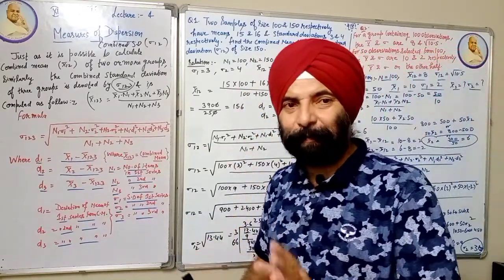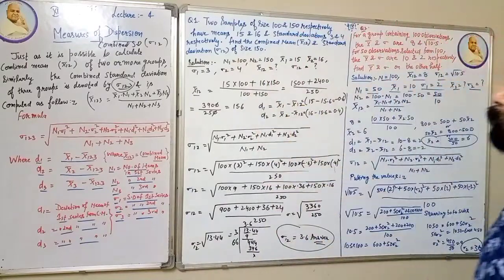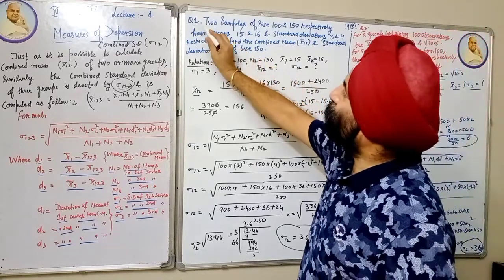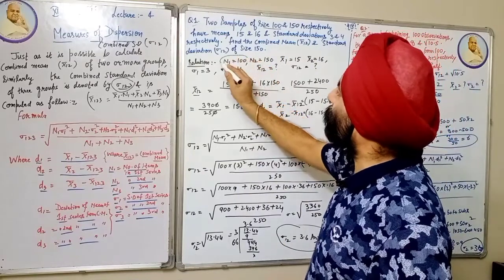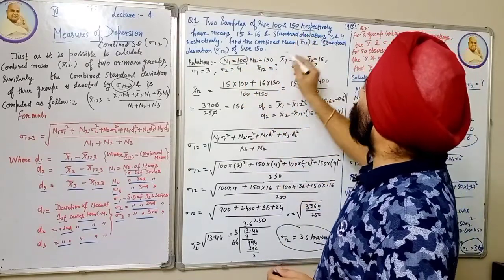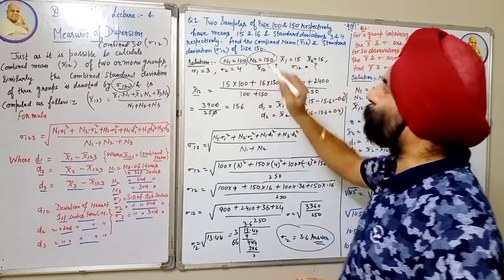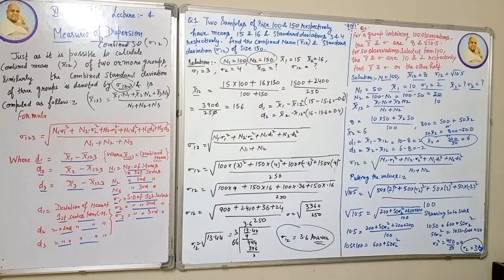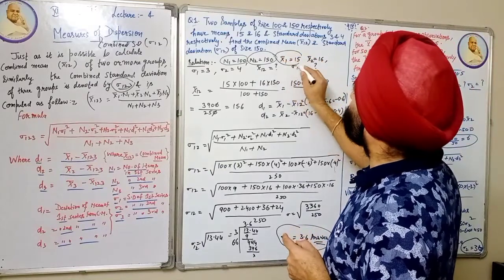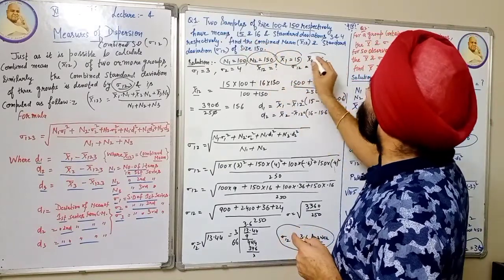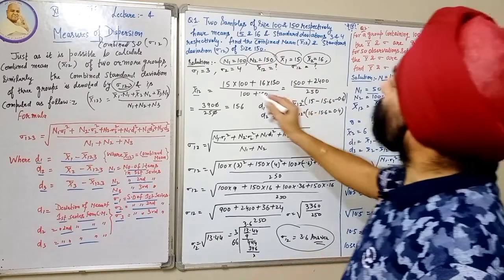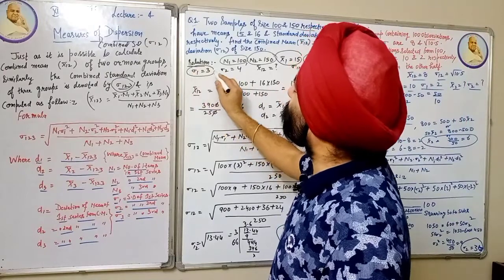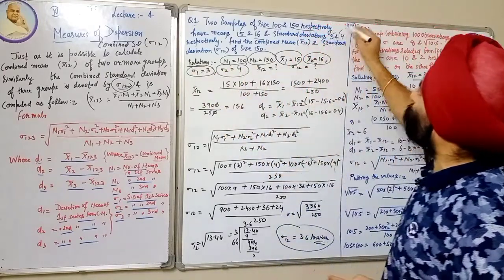Now we start practicing numerical number one. Two samples of size 100 — so N1 = 100 — and 150 — so N2 = 150. They have means: mean of the first series = 15, mean of the second series = 16. And standard deviations: first series σ1 = 3, second series σ2 = 4.